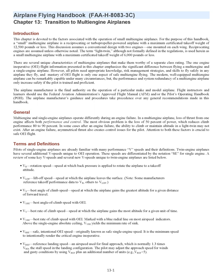Terms and Definitions. Pilots of single-engine airplanes are already familiar with many performance V-speeds and their definitions. Twin-engine airplanes have several additional V-speeds unique to OEI operation, differentiated by the notation SE for single-engine. Key V-speeds include: VR (Rotation Speed) — speed at which back pressure is applied to rotate the airplane to a takeoff attitude; VLOF (Liftoff Speed) — speed at which the airplane leaves the surface; VX (Best Angle of Climb Speed) — speed at which the airplane gains the greatest altitude for a given distance of forward travel; VXSE (Best Angle of Climb Speed with OEI); VY (Best Rate of Climb Speed) — speed at which the airplane gains the most altitude for a given unit of time; and VYSE (Best Rate of Climb Speed with OEI).